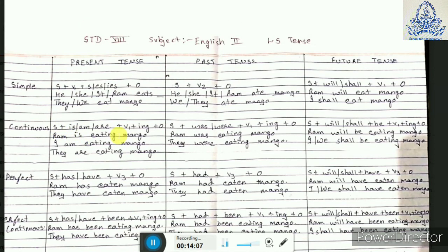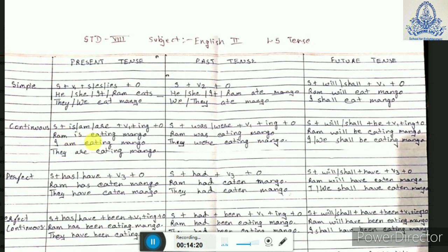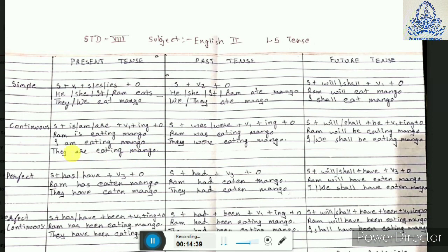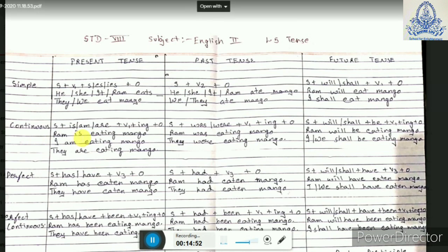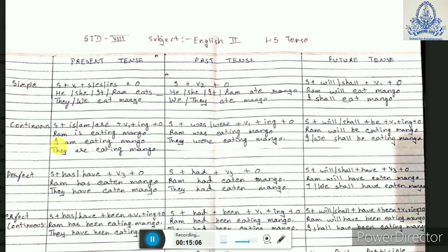Now moving to present continuous tense. Here we have subject plus IS, AM, or ARE — one of the helping verbs — plus verb 1 plus ING plus object. For example, 'Ram is eating mango.' For he or she, also use IS: 'He is eating mango,' 'She is eating mango' — all singular subjects use IS. When the subject is I, use AM: 'I am eating mango.' When the subject is plural — they or we — use ARE: 'They are eating mango.' Remember, for present continuous tense we use IS, AM, or ARE.